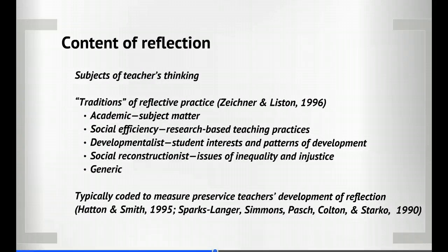The content of reflection is really what are you thinking about, what are you talking about? Zeichner and Liston, two very influential scholars on teacher education and reflection, broke it down into about five different categories. When people do research on students' development of reflection or teachers' reflective thinking, they code it — taking writing and looking for certain words, themes, or ideas. For example, if students start talking about ELL students in their class and issues of access and equity, that indicates they're starting to move into a social reconstructionist or critical orientation to reflection.